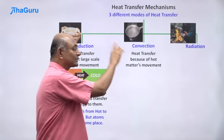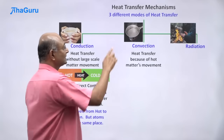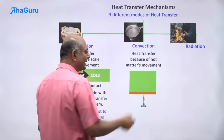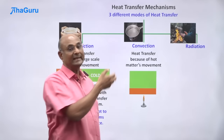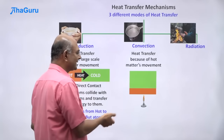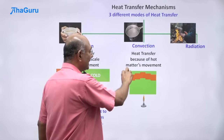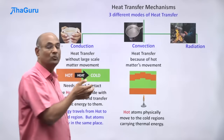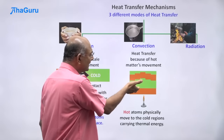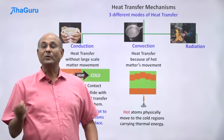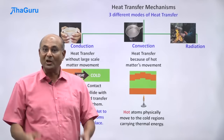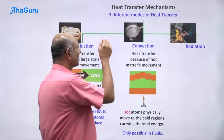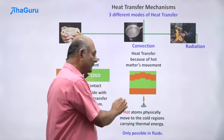In convection, matter actually moves. Heat transfer happens because of hot matter's movement — that is convection. Consider a liquid like water being heated. The bottom layer is the one that gets hot, and once it gets hot it starts rising up, because it is hotter and its density gets lesser. By physically moving up, it heats up that region, and the next layer starts getting hot. Here the hot atoms physically move to the cold region, carrying thermal energy with them. For atoms to move within a material like this, flow of atoms must be allowed. Flow of atoms is not allowed in solids — it is only allowed in liquids and gases. So convection is not possible in solids; it is only possible in liquids and gases.